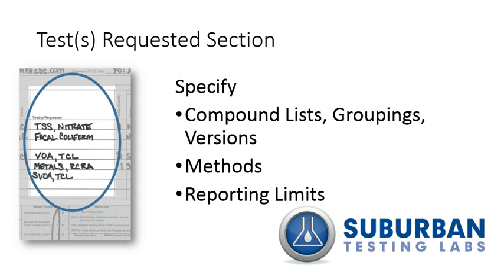The same example is true with virtually all methods run in our organics department. Take volatiles, for example. We run different methods in our volatile organics lab, and depending on which regulatory program is applicable, there are different compound lists, reporting limits, and holding times. In the Tests Requested section of the Chain of Custody form, please be sure to specify the test name, method, and target list completely.